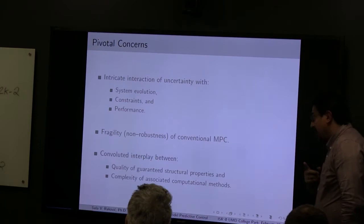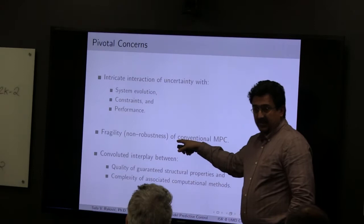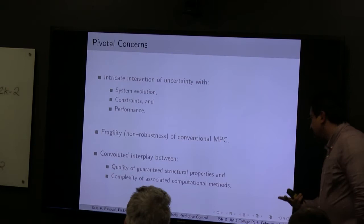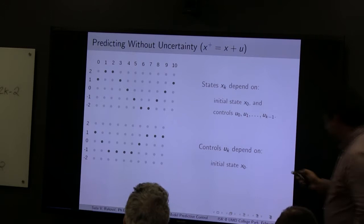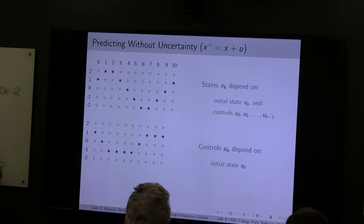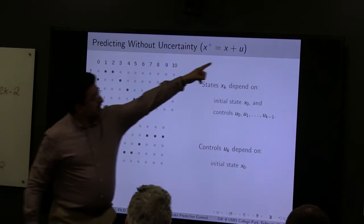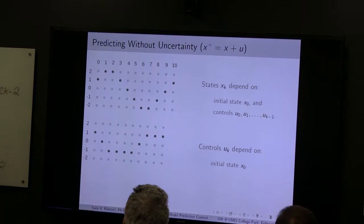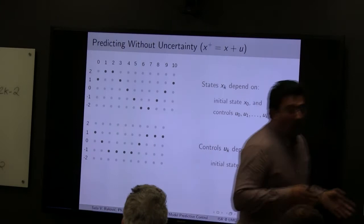Furthermore, conventional MPC without uncertainty modeling may be non-robust. There is a convoluted interplay between quality of theoretical properties and complexity of the associated computational methods. If you have to predict without uncertainty — following a trajectory from a known initial state — you can select the sequence of controls based on the model to achieve perfect tracking. You can choose all control inputs at state x₀. When there is no uncertainty, open-loop and closed-loop control give you the same results. But that doesn't happen in the real world.